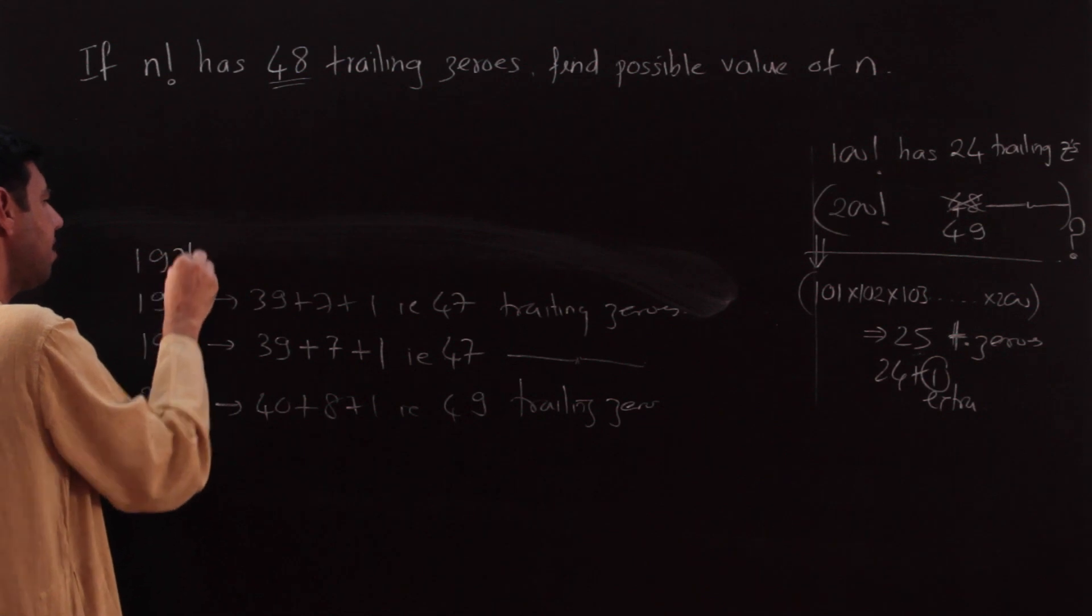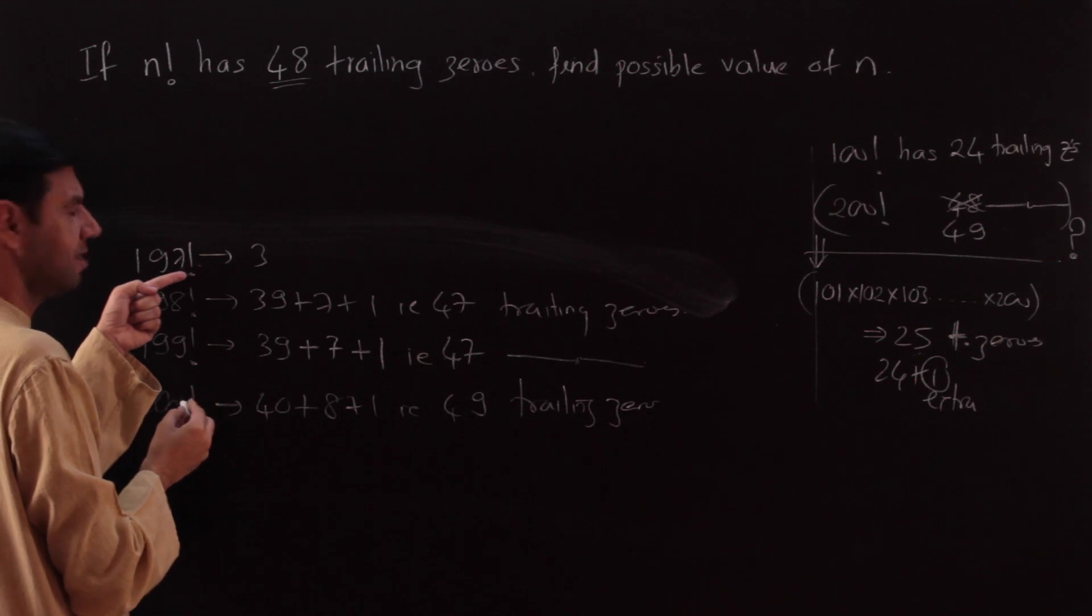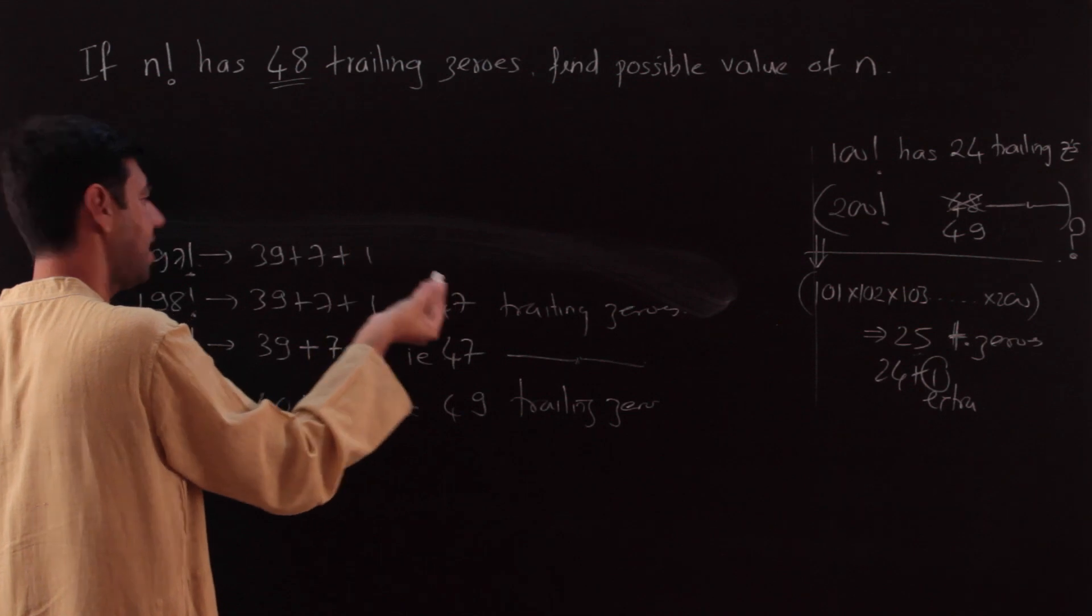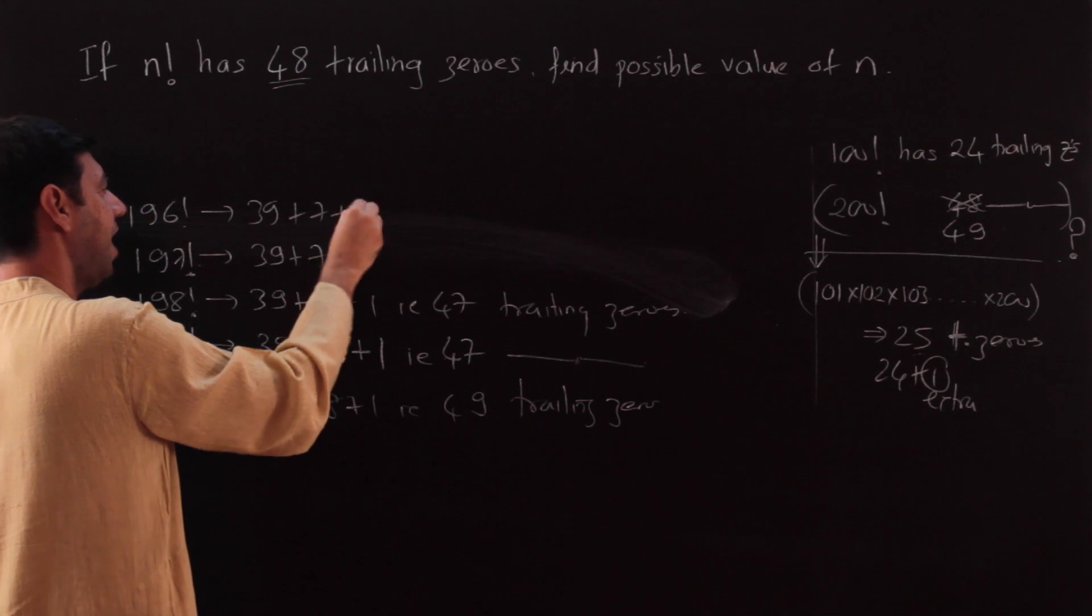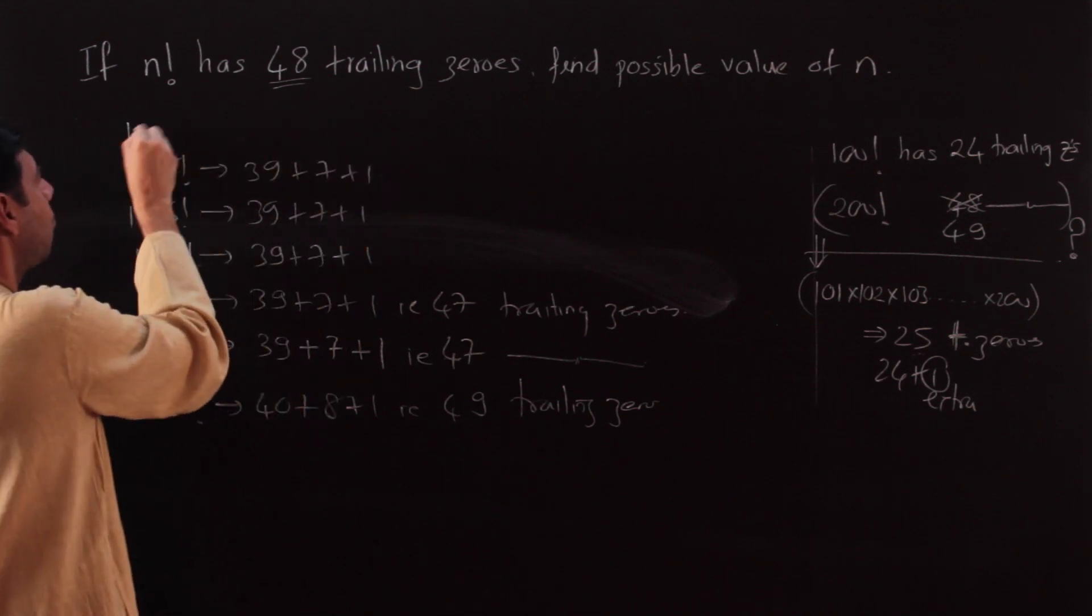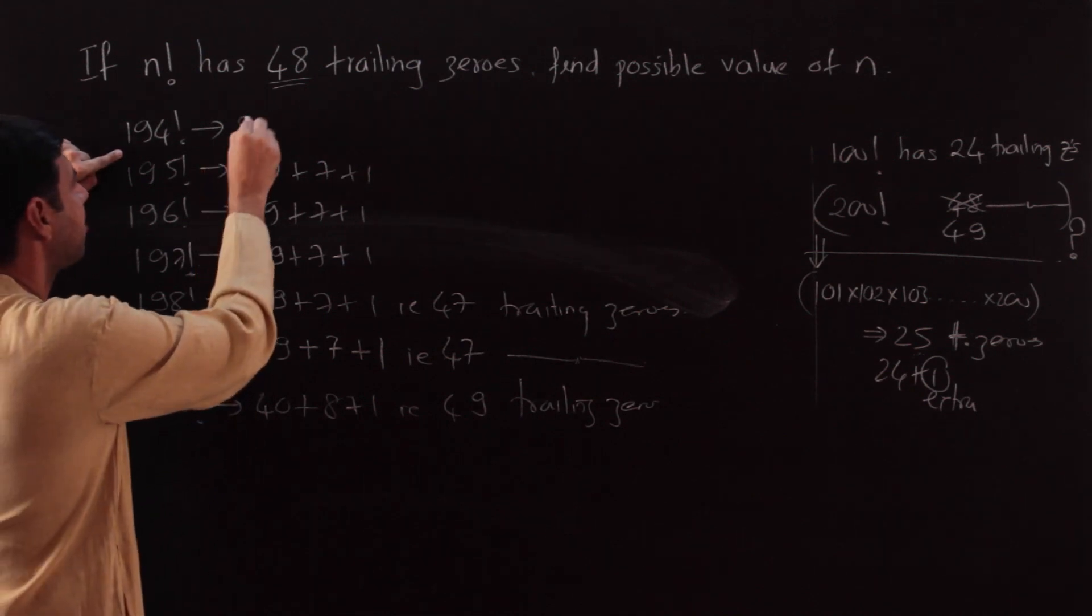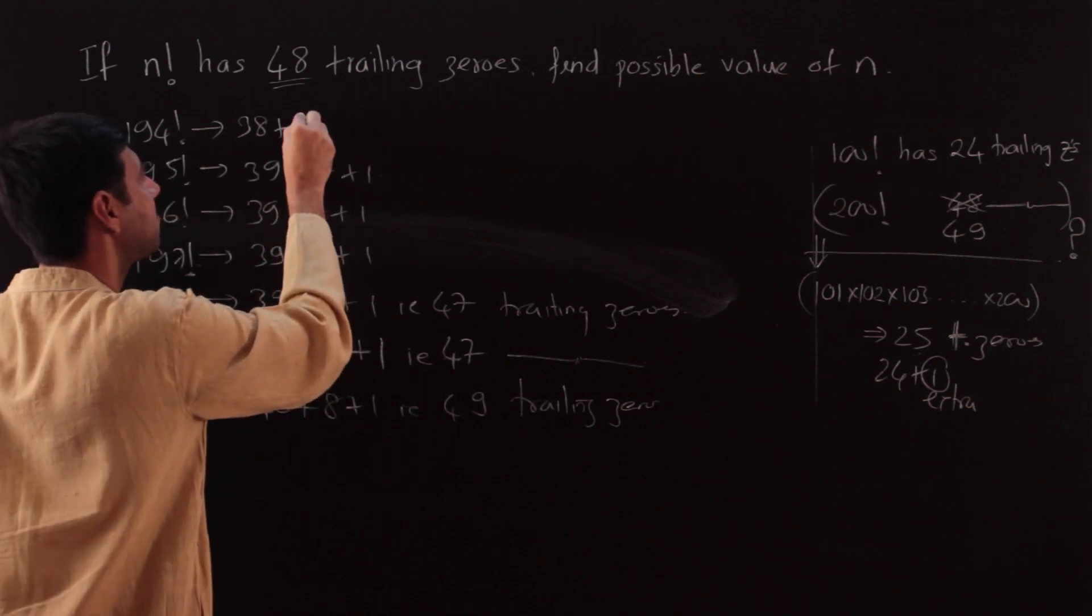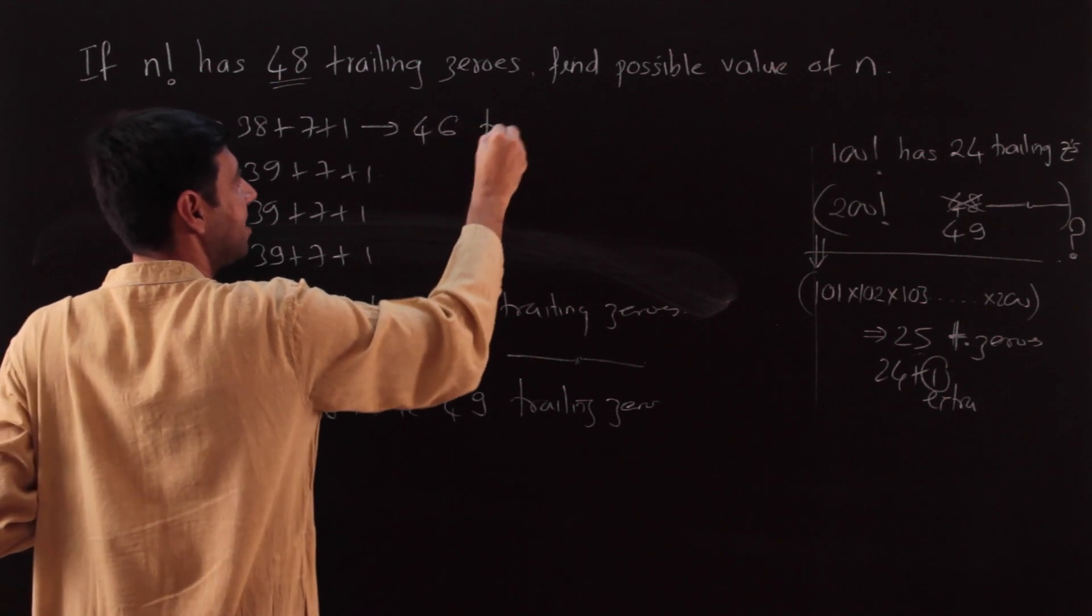What about 197? 197: 5 times 3 is 15, left over is 47. This also has the same. 196 also, if you do, will have the same. 195 will have the same. What will change is at 194. When I divide 194 by 5: 5 times 3 is 15, so 44. That will become 38. 5 times 7 is 35. The others remain the same, so this is going to have 46 trailing zeros.